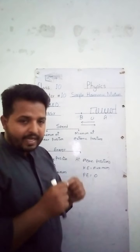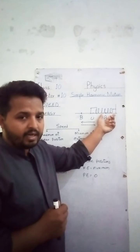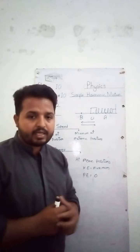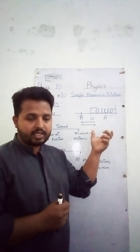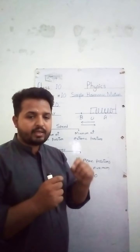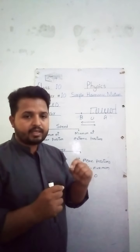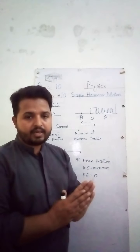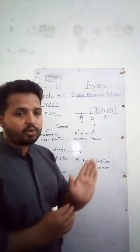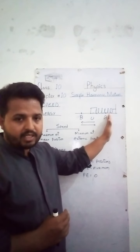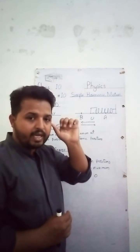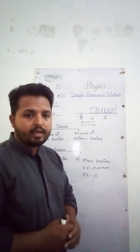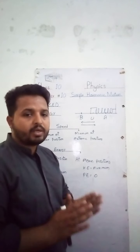When we compress the spring towards position A or stretch the spring towards position B, we use energy in compressing or stretching. That energy used in compressing or stretching the spring is stored in the spring as potential energy, because that energy is due to the stretched or compressed position of the object.